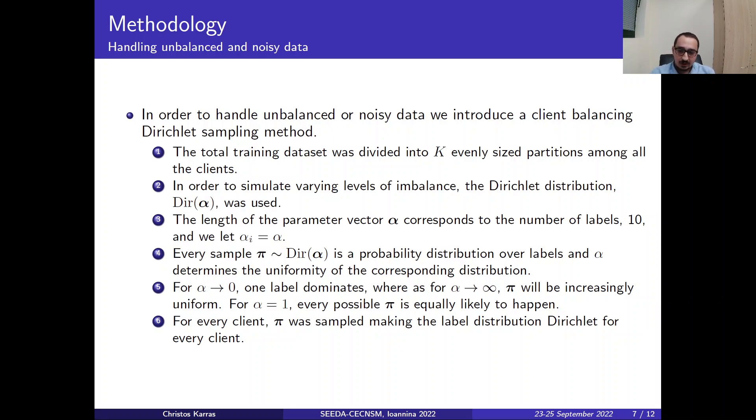For the case where α equals 1, every possible P is equally likely to happen, and that's the scenario where we want to stick on. So for every client, P was sampled making the label distribution Dirichlet for every client.